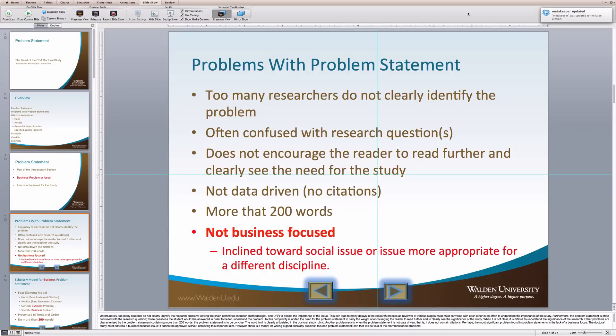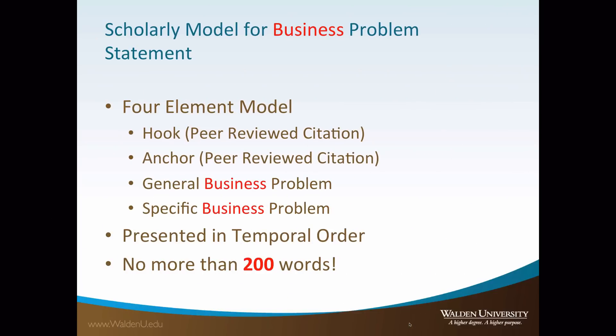It cannot be approved without achieving this important aim. However, there is a model for writing a good scholarly business-focused problem statement, one that will be void of the aforementioned problems. The Walden model for a business problem statement comprises four essential elements: the hook, which is a while statement; the anchor, a number; the general business problem; and the specific business problem. Together, these four elements, when well crafted, formulate the foundation of a well-informed and scholarly doctoral business study.